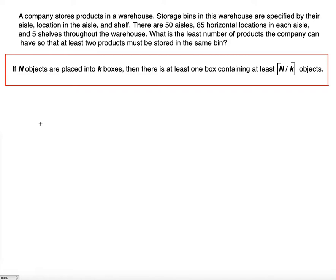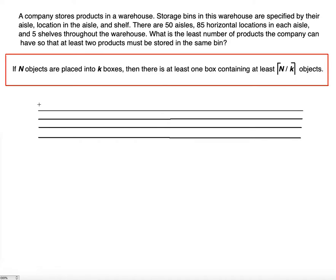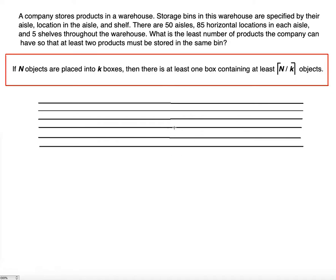Let's make an aisle. Suppose this is an aisle, and in this aisle there's a horizontal location. In each aisle there are also five shelves. We can draw the second shelf, the third shelf, the fourth shelf, and the fifth shelf. This is one aisle. So horizontal location determines which column will be used, and the vertical location is determined by which shelf number you use. This is shelf five, shelf one, shelf three, shelf four, and so on. This is one bin, this is another bin, another bin, another bin.